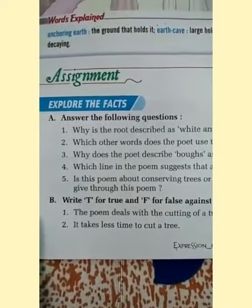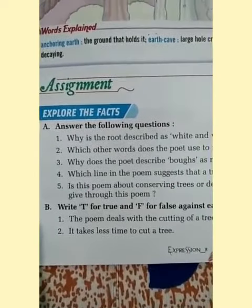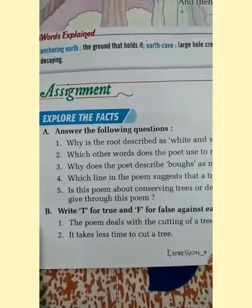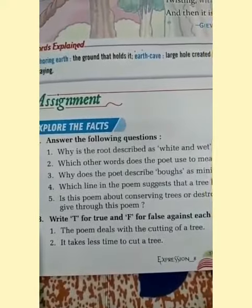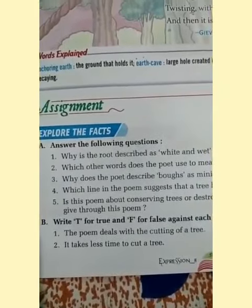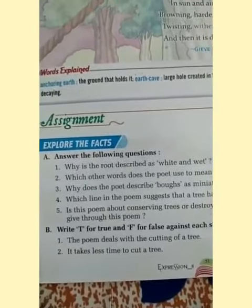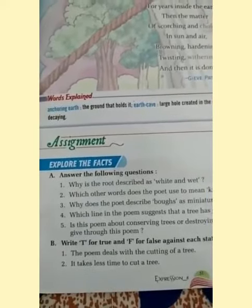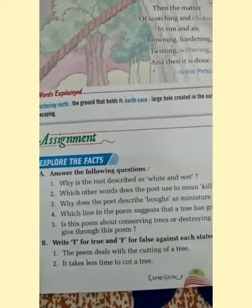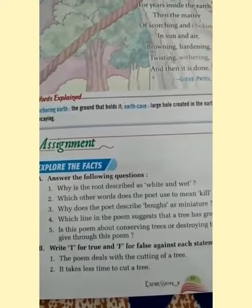Today I will give exercise B of chapter 8 on killing a tree. This is exercise B. Write T for true and F for false against each statement.